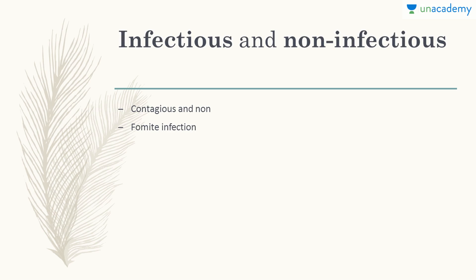There are infectious diseases and non-infectious diseases. Infectious diseases spread from person to person by different contacts — physical contact or other contacts — and are also called contagious diseases. If the disease spreads by personal or physical contact, or is airborne or through droplet infection, it is called contagious. Within infectious diseases, there is fomite infection — infection that spreads through objects, like using the same towels or combs. Some fungal infections are transmitted this way.